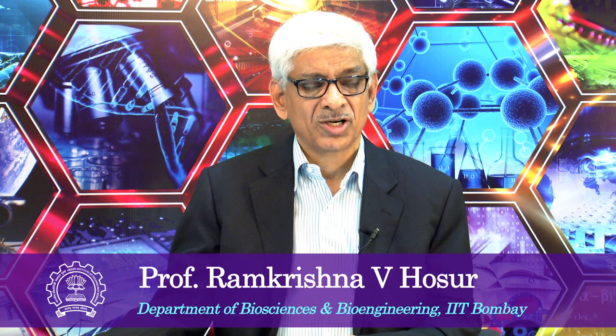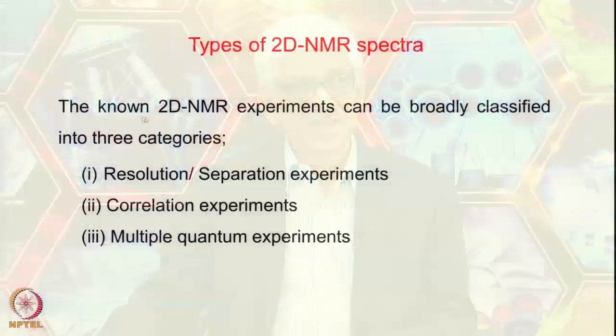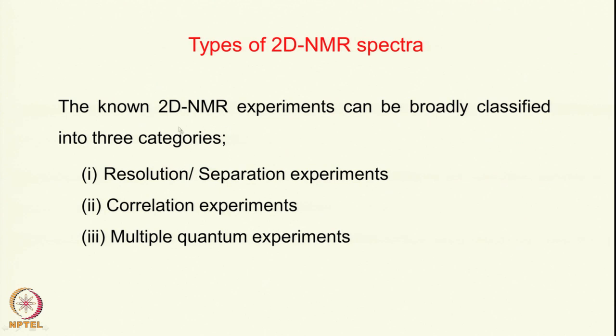Having covered the principles of obtaining 2D spectra, how to record them, and how to obtain pure phase experiments, we can now discuss the various kinds of 2D NMR experiments. Known 2D NMR experiments can be broadly classified into three categories: resolution and separation experiments, correlation experiments, and multiple quantum experiments. We will go into these individual experiments in greater detail one by one in the coming classes.